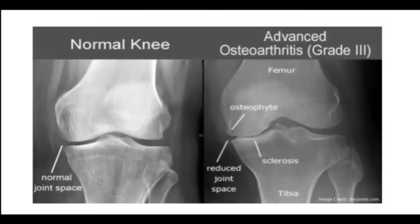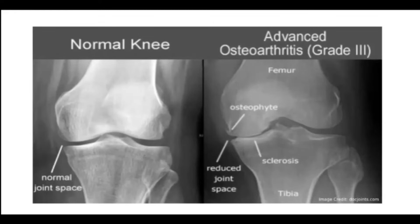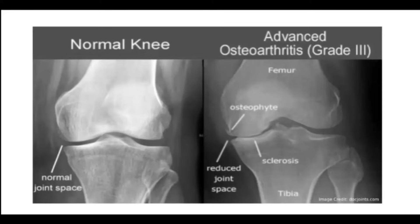I always make sure I get standard views for a knee. I want a weight-bearing film — so I want them standing up. I like to get an AP, a PA flex view (also called a skier's view), a sunrise view of the kneecap, and then a lateral. For any joint, make sure you get an appropriate set of films — for a knee, that's three or four views. Weight-bearing views are crucial. The difference in joint space narrowing with and without weight-bearing can be quite marked, and it really helps you quantify accurately the amount of joint space narrowing.